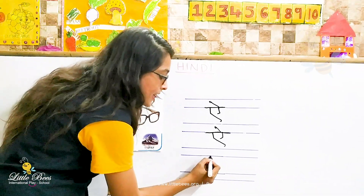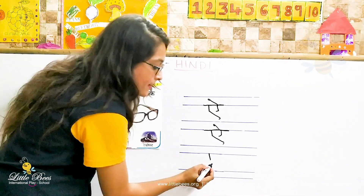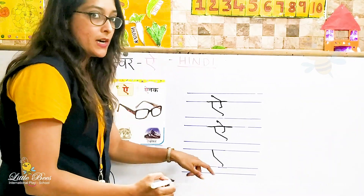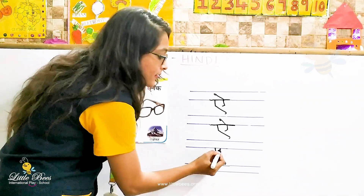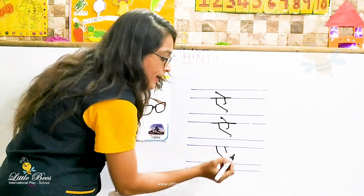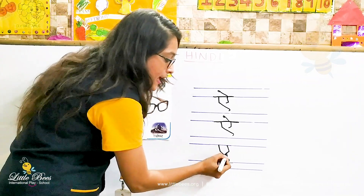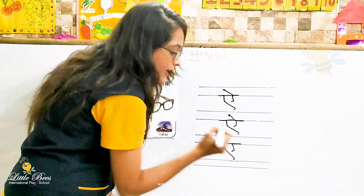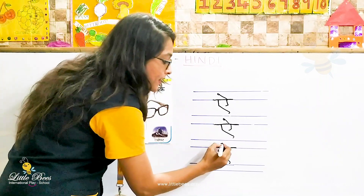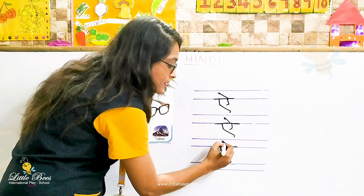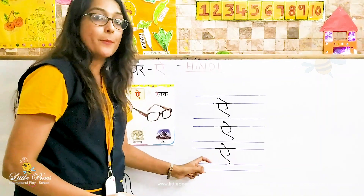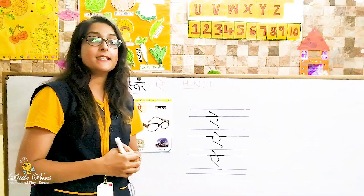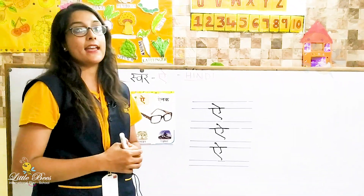Let's do it again: standing line, a slanting line and a curve backward, another standing line, then a slanting line. Let's draw a sleeping line, then we make a tail on the top. This is the swar ae.